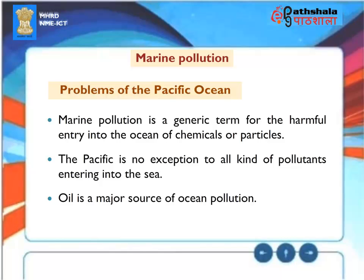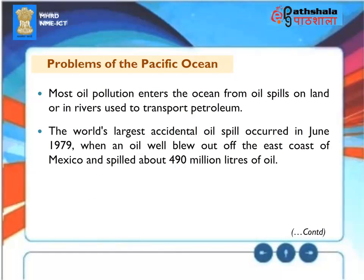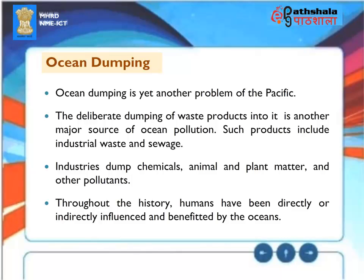Marine Pollution: Marine pollution is a generic term for the harmful entry of chemicals or particles into the ocean, and the Pacific is no exception to all kinds of pollutants entering the sea. Oil is a major source of ocean pollution, with most oil pollution entering from spills on land or in rivers. The world's largest accidental oil spill occurred in June 1979, when an oil well blew out off the east coast of Mexico, spilling about 490 million liters of oil. Ocean dumping — the deliberate disposal of waste products such as industrial waste, sewage, chemicals, and animal and plant matter — is another major source of ocean pollution.